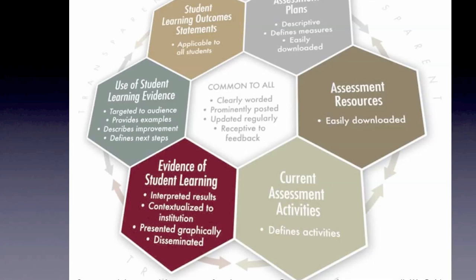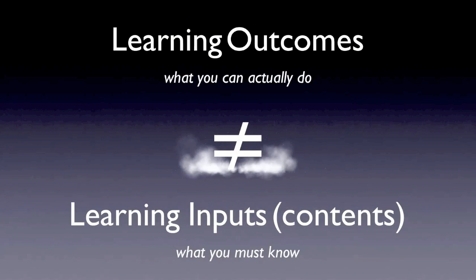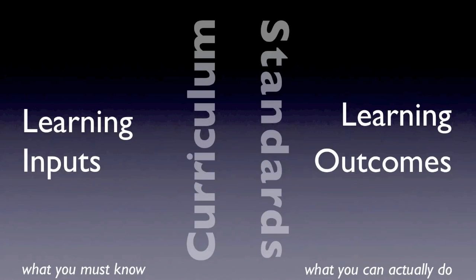This picture is very interesting. It has been developed by the National Institute for Learning Outcomes Assessment. When you read the keywords here, it is about transparency, how things are clearly worded, permanently posted, updated regularly, and receptive to feedback. The specificity about competency-based learning is that we focus on learning outcomes — that is, what you can actually do — and not on the learning inputs, that is, the content, the knowledge, what you must know. Learning inputs traditionally are defined in a curriculum, while learning outcomes are defined in standards.